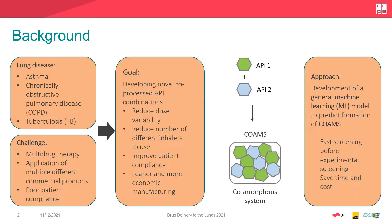Coming to the motivation and background of the work: lung diseases such as asthma, chronically obstructive pulmonary disease and tuberculosis require a multi-drug therapy. It's quite common that patients take multiple different commercial products, which leads to poor patient compliance. The goal is to develop novel co-processed API combinations to reduce that variability and reduce the number of different inhalers or medications to take. This shall improve patient compliance, and another advantage is that co-processed systems act as one single system instead of two single APIs, making manufacturing more economic and formulation development easier.